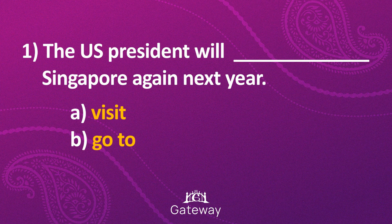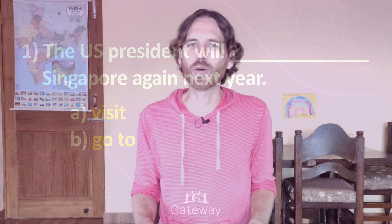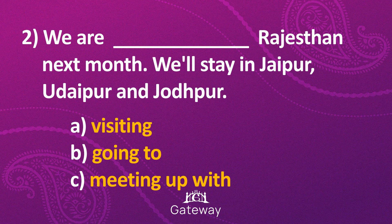Now let's practise. I will read a sentence with a word missing and you choose the right word. Number one: 'The US president will — (a) visit or (b) go to — Singapore again next year.' If you chose 'visit,' then you got it right. Good work! Number two: 'We are — (a) visiting, (b) going to, or (c) meeting up with — Rajasthan next month. We'll stay in Jaipur, Udaipur, and Jodhpur.'